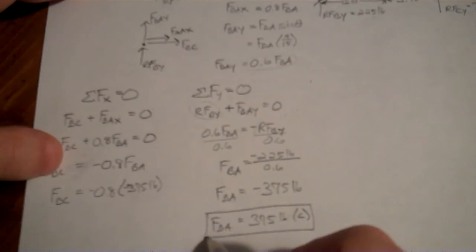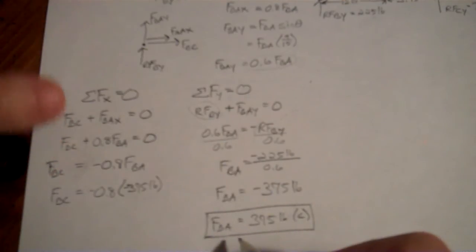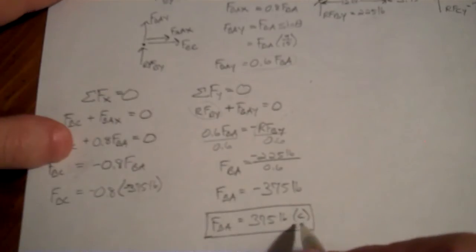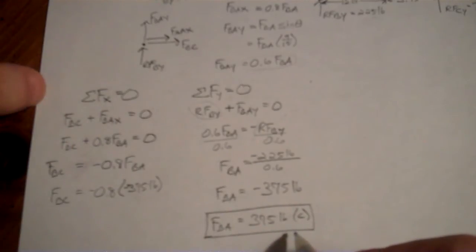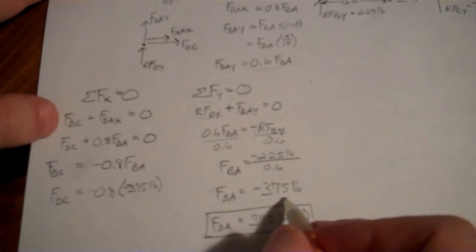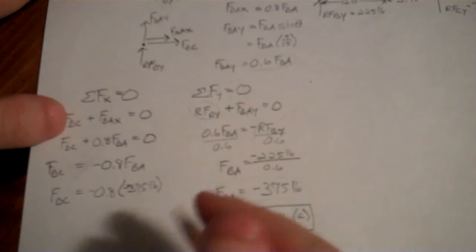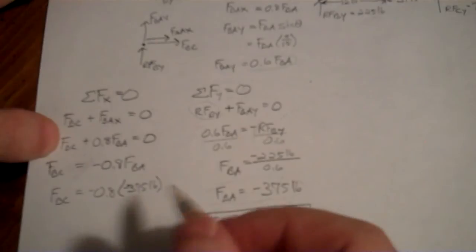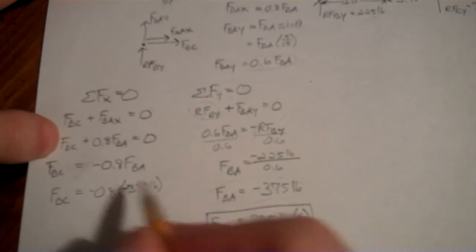When I'm reporting it, it's more convenient to say it's 375 pounds of compression. That's what the negative means in this case. But if I'm going to plug it back in, I should keep the value of negative 375 so that all the math works out. I can't tell the equation, hey, this is in compression. I say that by adding the negative in there.